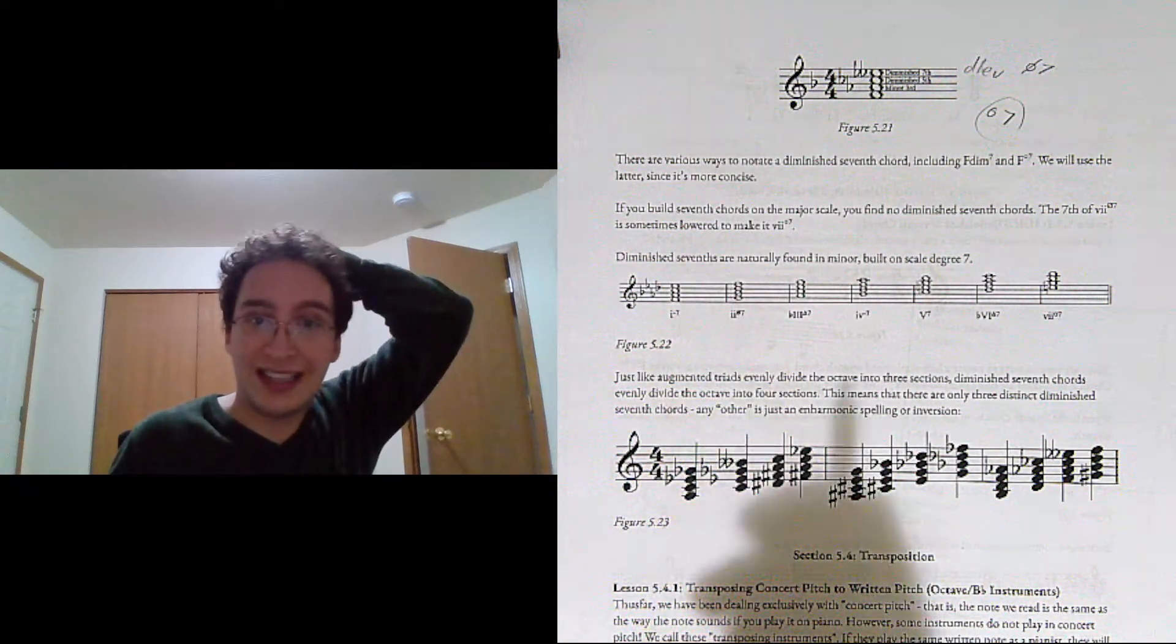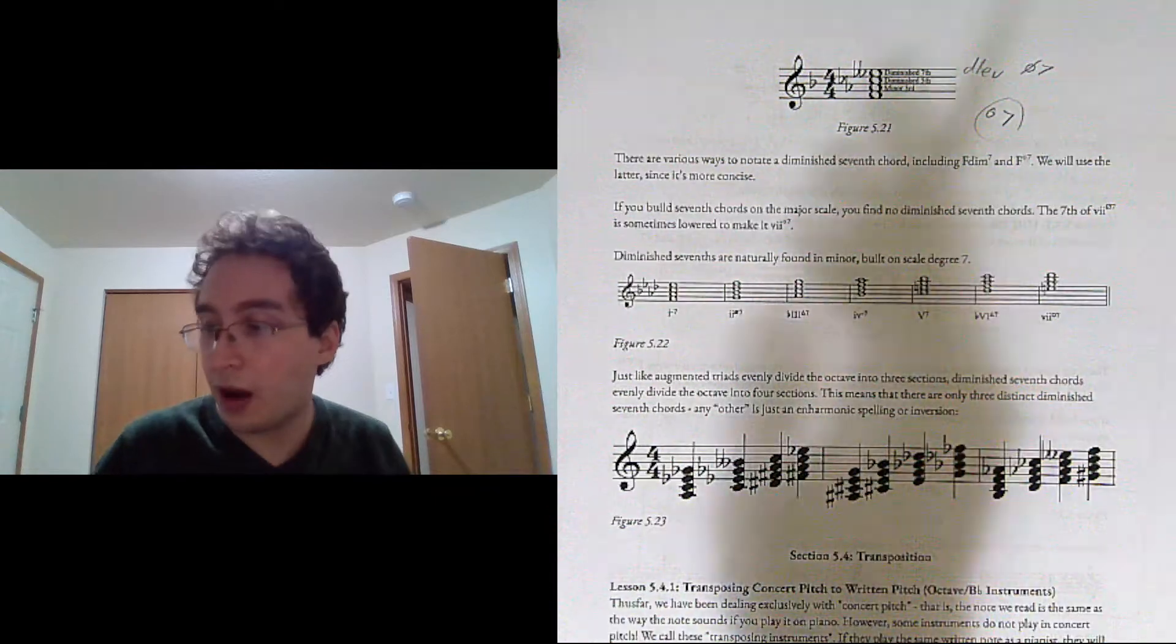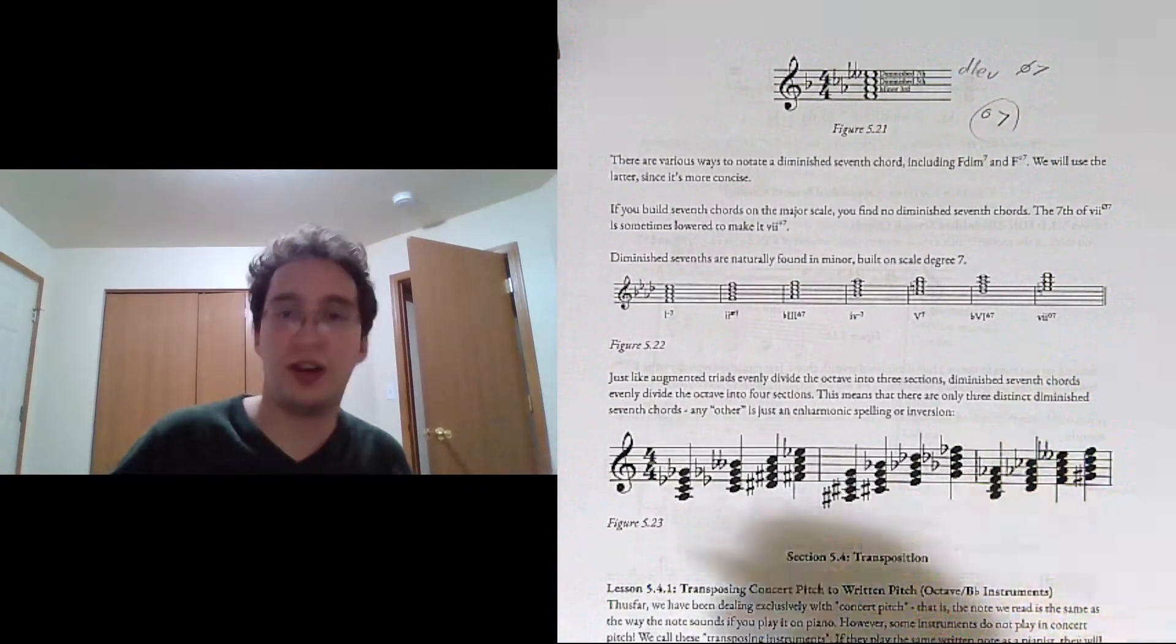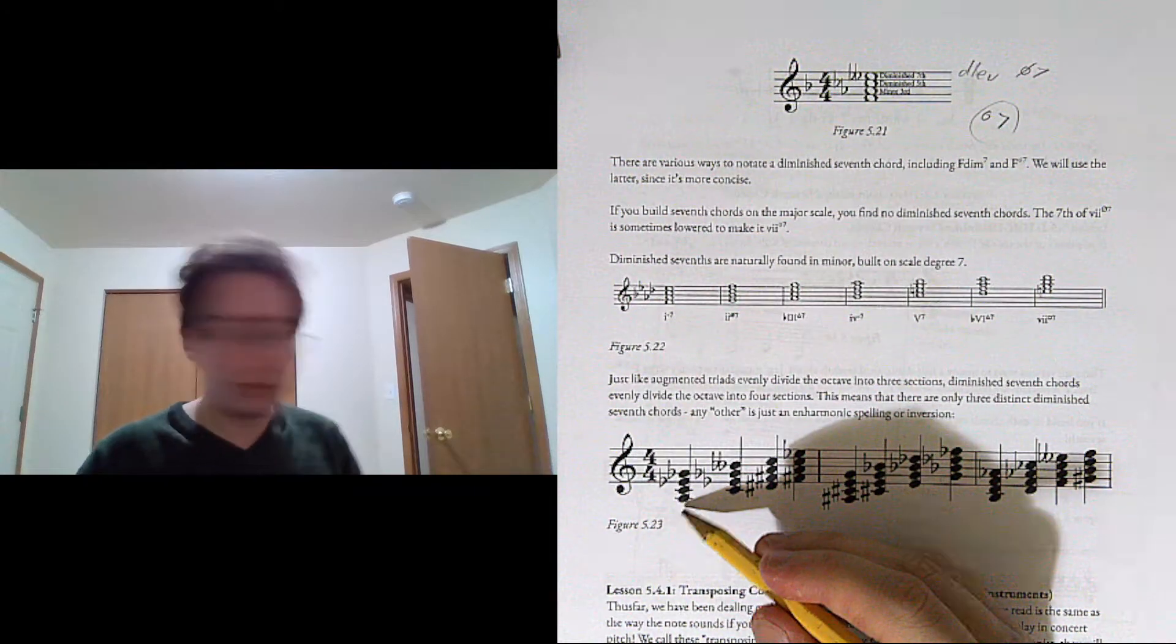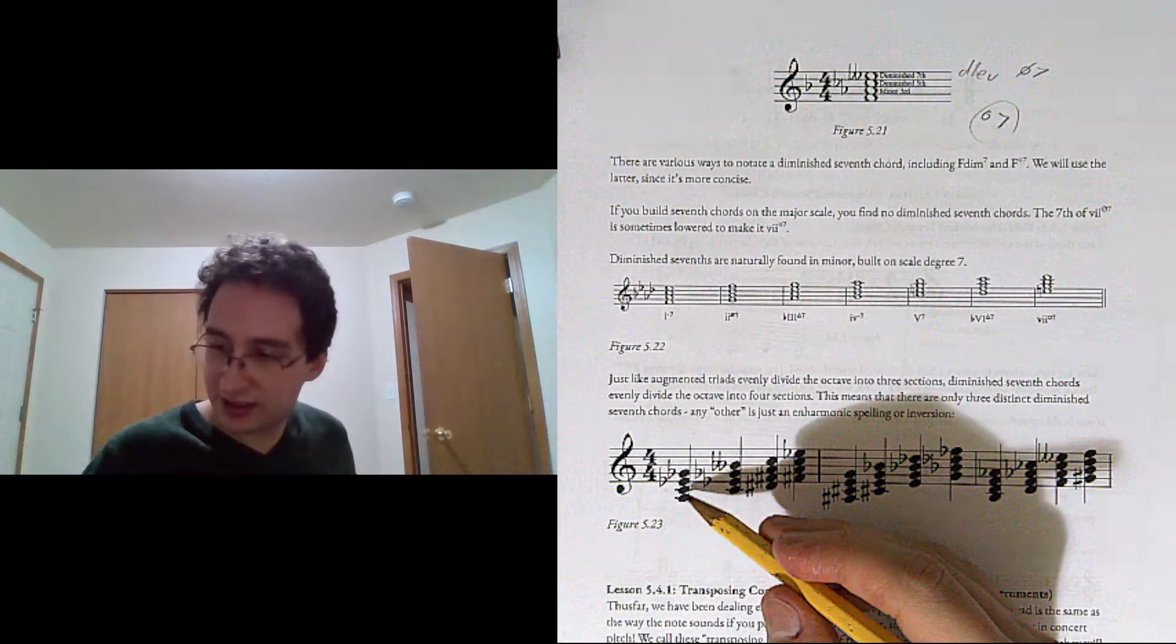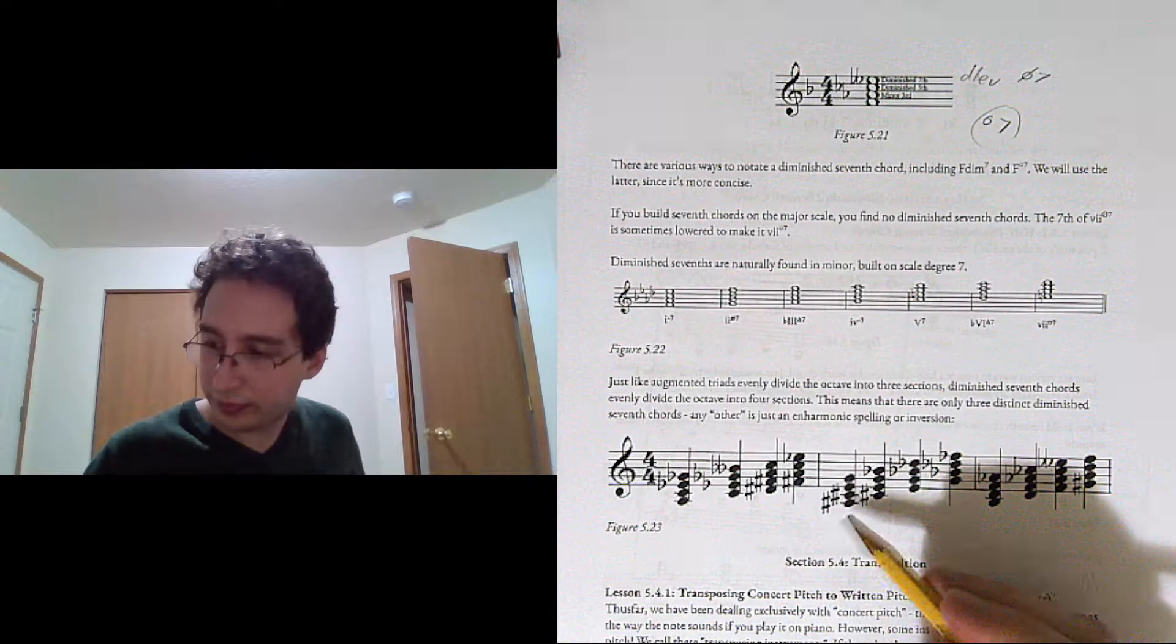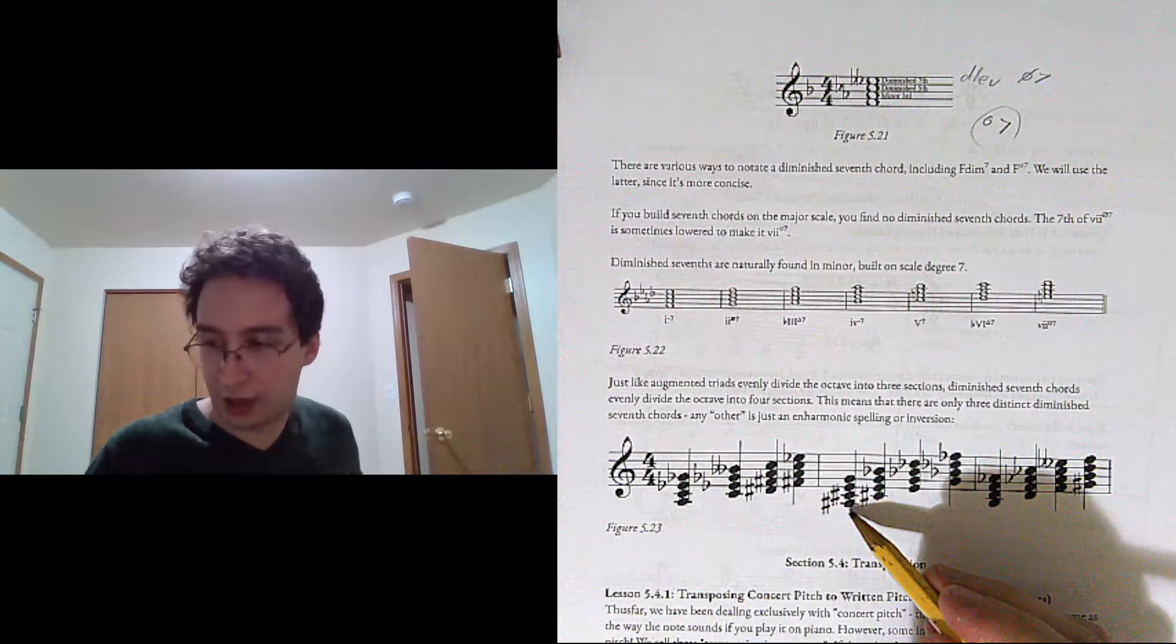So that means there are only three distinct diminished 7th chords. Any other diminished 7th chord is just an enharmonic spelling or an inversion. So you have a diminished 7th chord built on A, that also has C, E flat, and G flat.